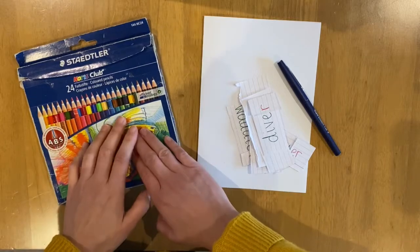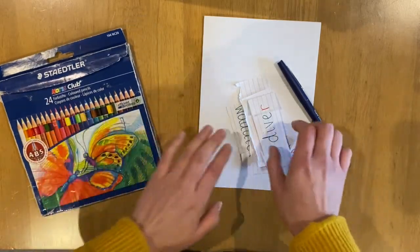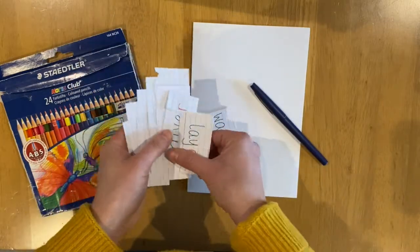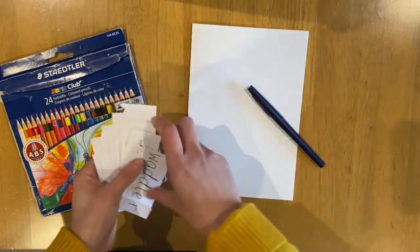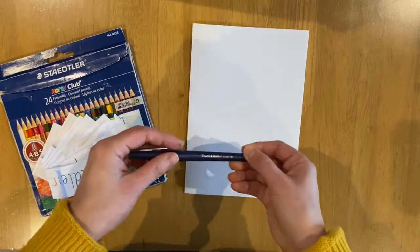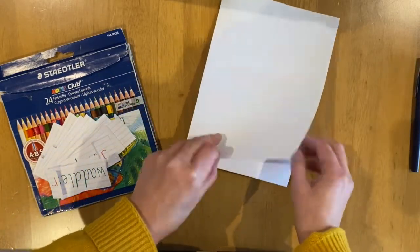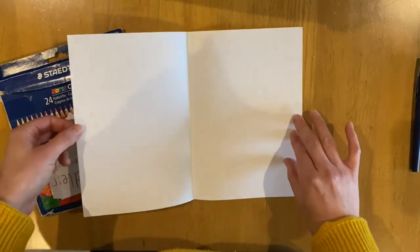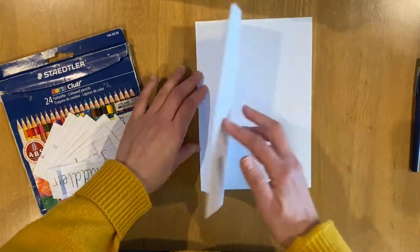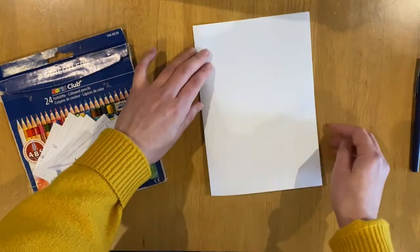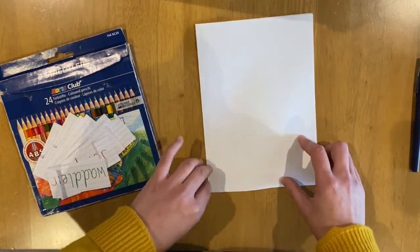You will need coloring pencils or coloring pens, your strips of words that you made yesterday, a pencil or a pen to write out your poem, and a piece of paper that is folded in half this way. So this is one piece of paper and I folded it in half so that it looks kind of like a book.